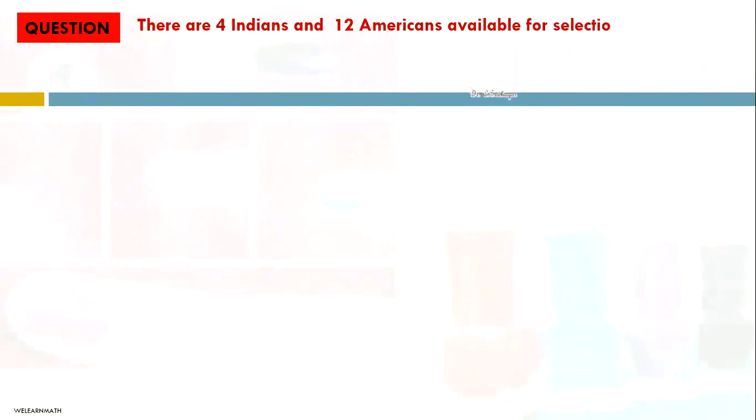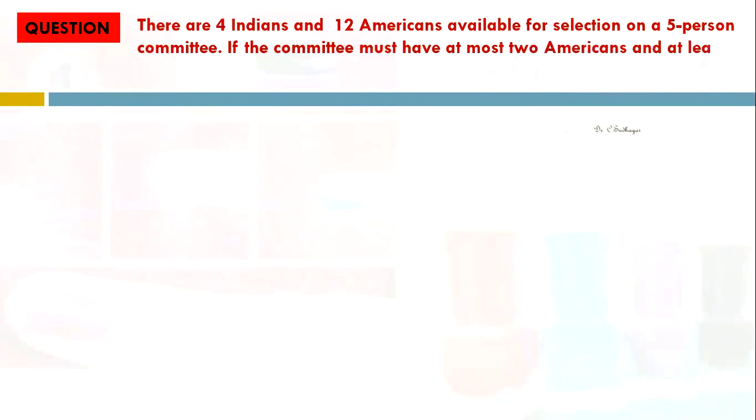Consider this problem: There are 4 Indians and 12 Americans available for selection on a 5-person committee. If the committee must have at most two Americans and at least two Indians, how many possible committees can be considered?